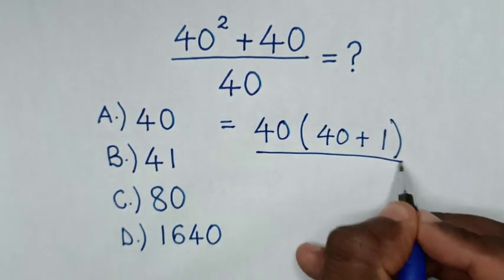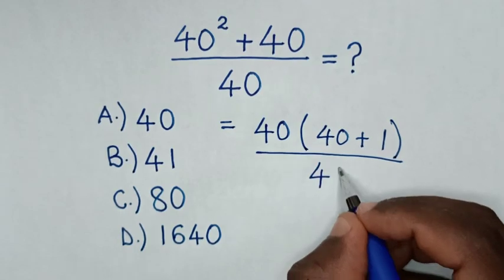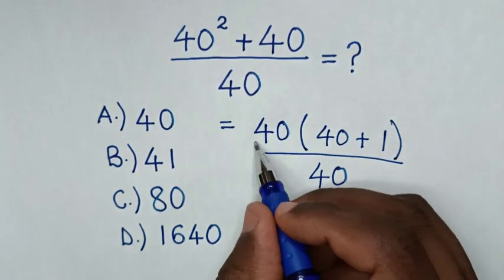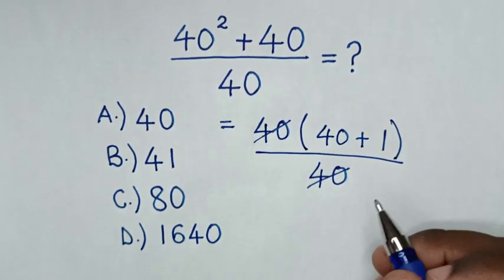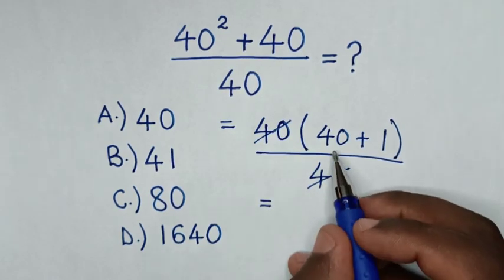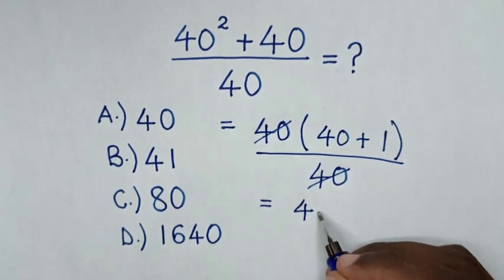Then over, here in the denominator is 40. Then to simplify, this 40 and this will cancel. So it will be equal to 40 plus 1 is 41.